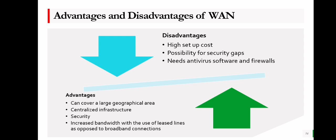A fourth advantage of WAN is increased bandwidth with the use of leased lines as opposed to broadband connections from internet service providers. Now for the disadvantages of WAN: high setup cost — if you are using a fiber optic type of connection it will cost much higher. Next is the possibility of security gaps. And lastly, it needs anti-virus software and firewalls. Those are the advantages and disadvantages of a WAN.